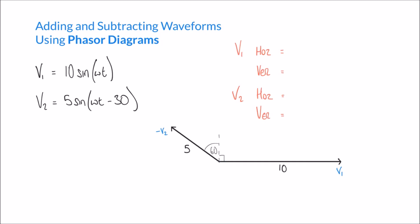First, looking at v1 — it is just a horizontal line pointing straight to the right on our phasor diagram. It has no vertical component, so its horizontal component is 10 and its vertical component is 0. Minus v2 is a little different because it has both a vertical and a horizontal component, so we need to use trigonometry to work those out.